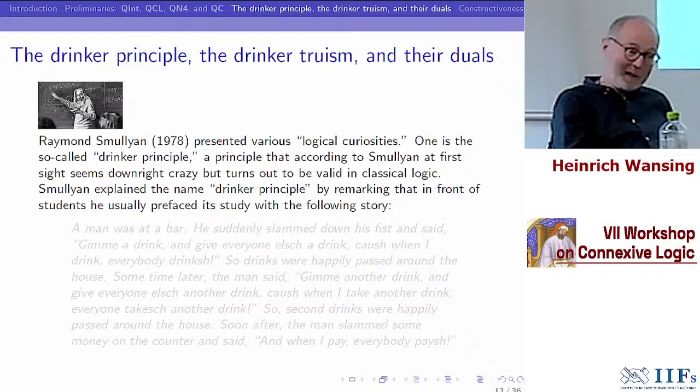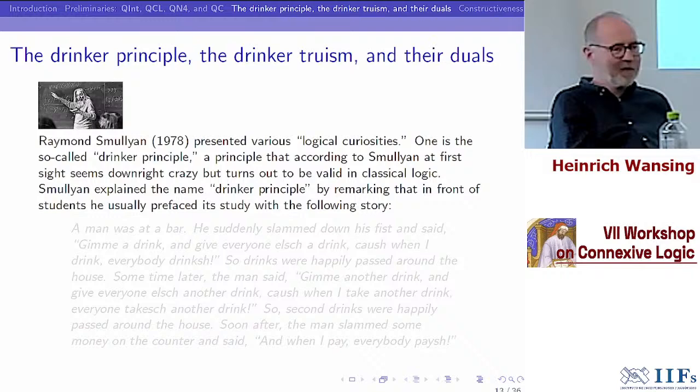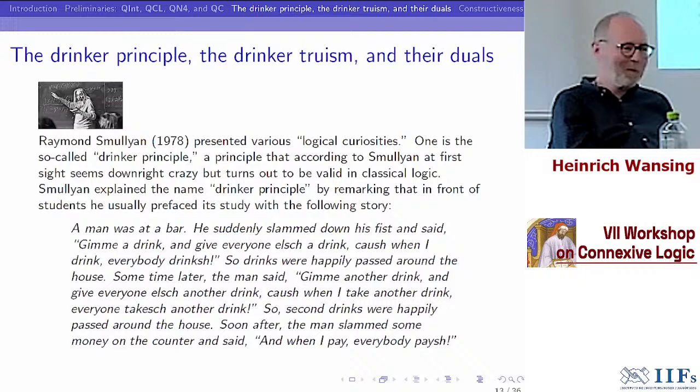We are done with the preliminaries. We can move on to the Drinker Principle or Drinker Paradox and the Drinker Truism and their duals. In a paper from 1978, Ray Smullyan presented various logical curiosities, one of which he called the Drinker Principle — a principle that, according to him, at first sight seems downright crazy, but then turns out to be valid in classical logic, which throws a certain light on classical logic.